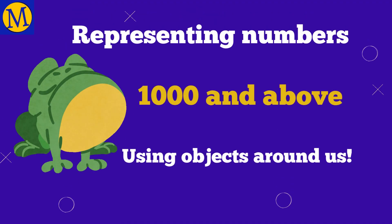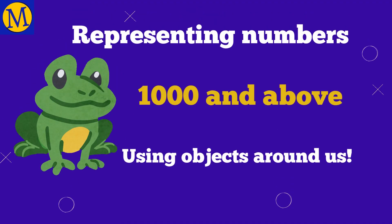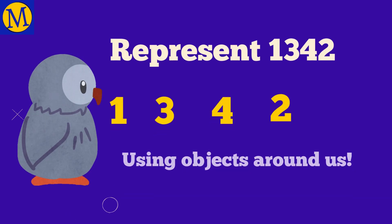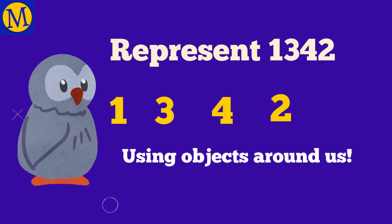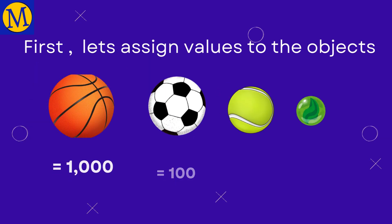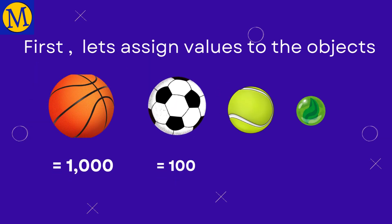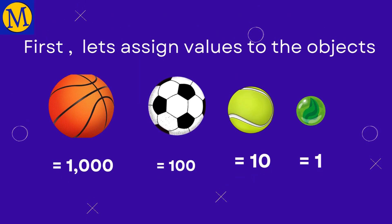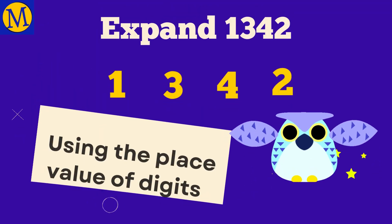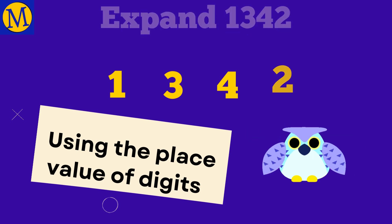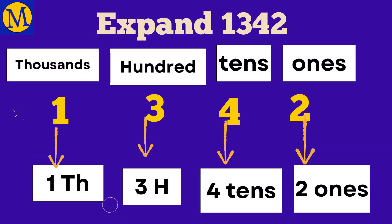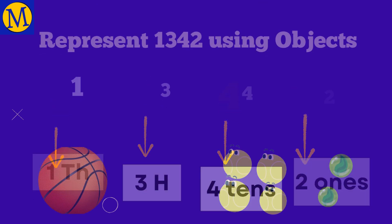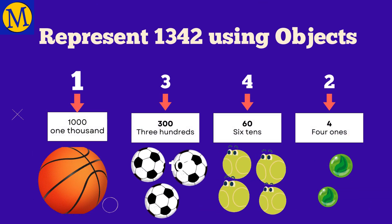Now let's take larger numbers — 1,342. Give the value 1000 to the basketball, 100 to the football, 10 to the tennis ball, and 1 to the marble. Expand the number: it has one 1000, three 100's, four 10's, and two 1's. Here's the number represented using objects.